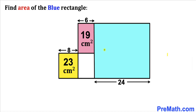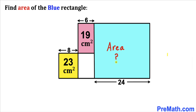Welcome to Premath. In this video we have a bunch of rectangles put together, as you can see in this diagram, such that the area of the pink rectangle is 19 cm², the area of the yellow rectangle is 23 cm², and the horizontal line segments are 6, 8, and 24 centimeters respectively. Our task is to calculate the area of the blue shaded rectangle.